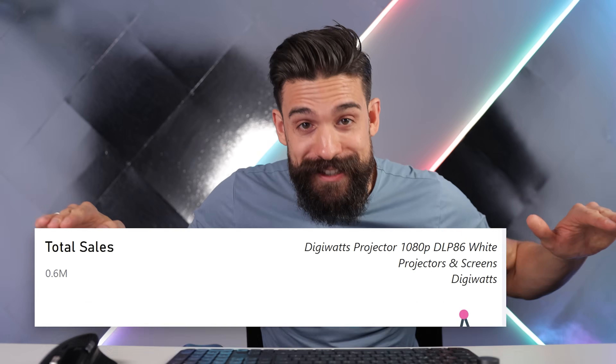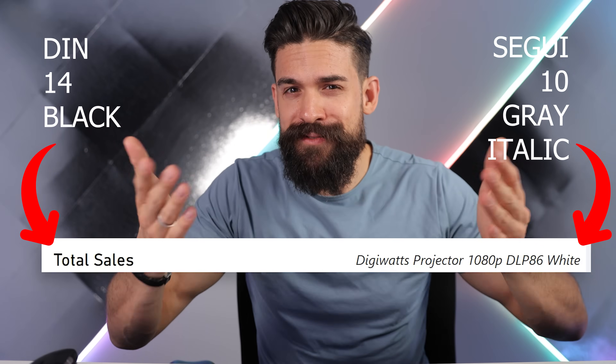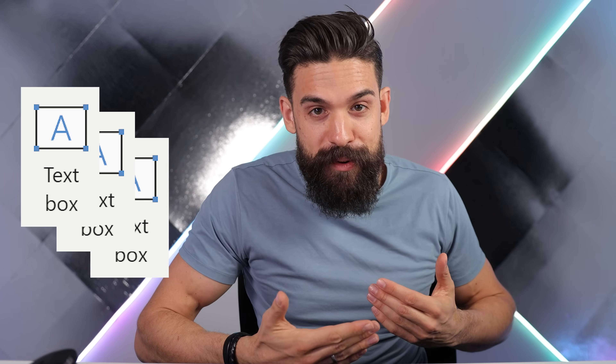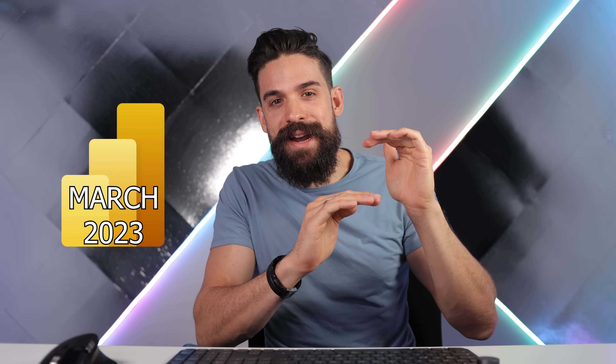Wouldn't it be amazing if we could have different font types, sizes and colors on the same line? You might think that must be straightforward. However, it's not possible unless you work with multiple text boxes, which is not ideal. But now from the March 2023 version we have titles and subtitles, and with a little trick we can achieve exactly that. In this video I'm going to show you how.